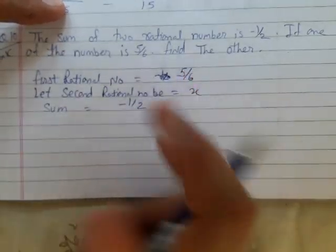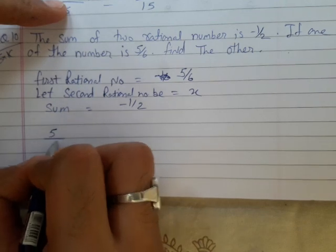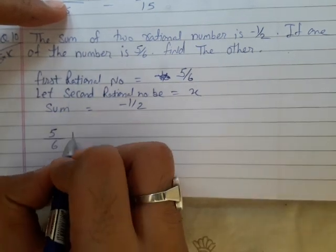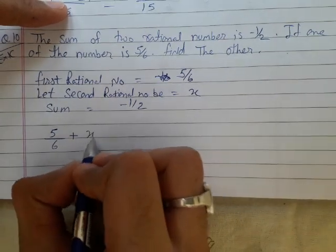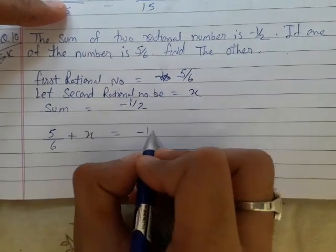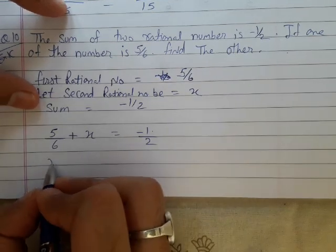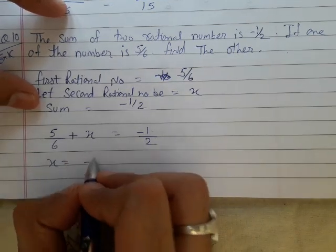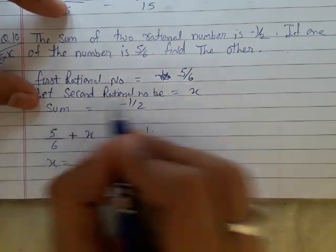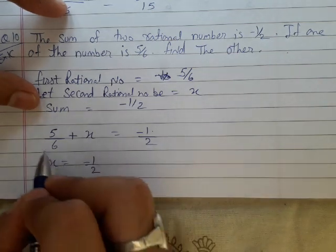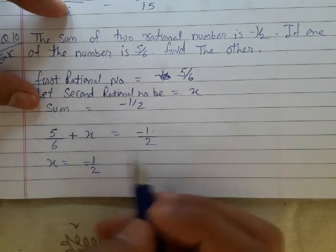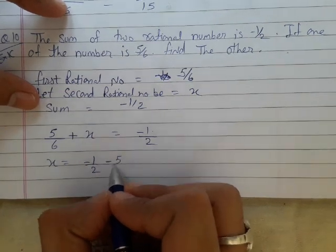Now I can say first rational number that is 5 upon 6 plus second rational number which is x is equals to minus 1 upon 2. I have to find value of x. So I can write x is equals to minus 1 upon 2. I will transpose this 5 upon 6 to the right hand side. The sign of 5 upon 6 will change. Here it is positive, so it will become negative 5 upon 6.